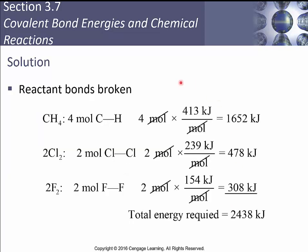Breaking reactant bonds: we have 4 moles of C-H bonds — 4 × 413 kJ/mol = 1652 kJ. We have 2 moles of Cl-Cl bonds — 2 × 293 kJ/mol = 478 kJ (note: instructor's stated value). We have 2 moles of F-F bonds — 2 × 154 kJ/mol = 308 kJ. The total energy required to break all those bonds is 2438 kJ.